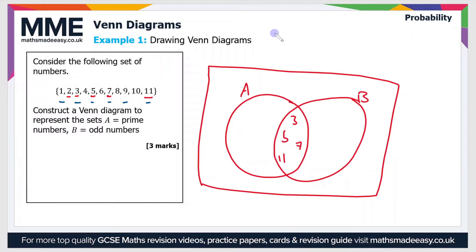Now we'll look for ones that are only in set A. So set A are the prime numbers, so we highlighted those in red. That's 2, 3, 5, 7 and 11. Now the only one that's not in the intersection is 2, as that's the only even prime number.